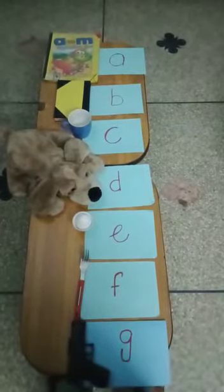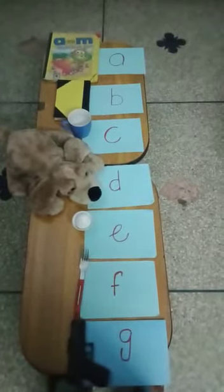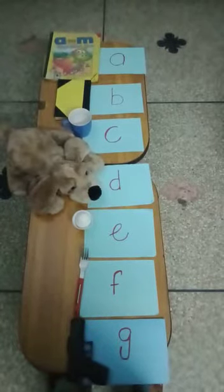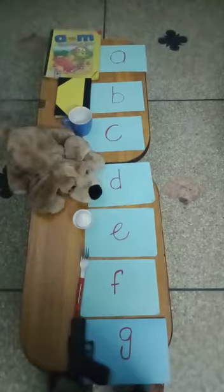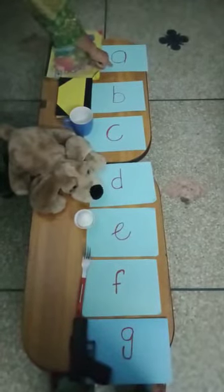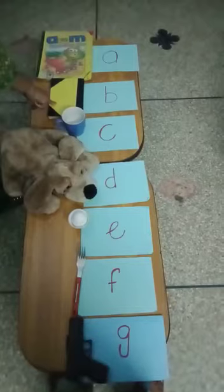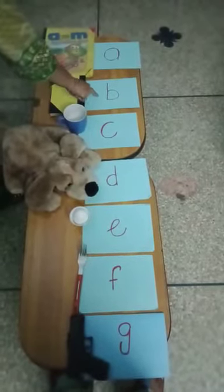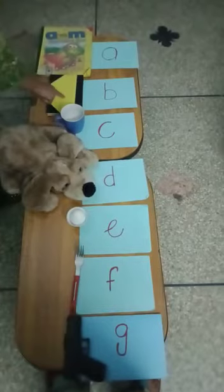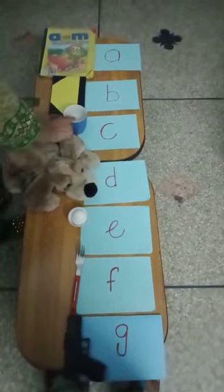You can always teach your child like this: show them different objects which relate to the alphabets. I have put on different objects like alphabet letters and alphabets. This is object and this is letter. Book, car, car, car, dog, dog.